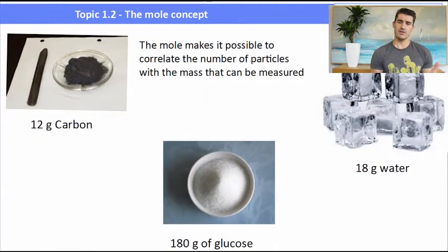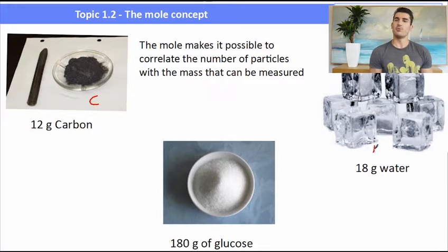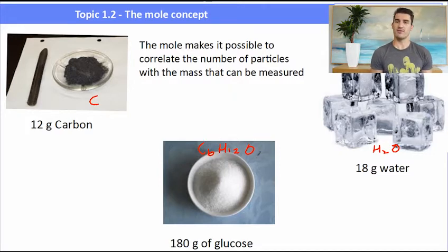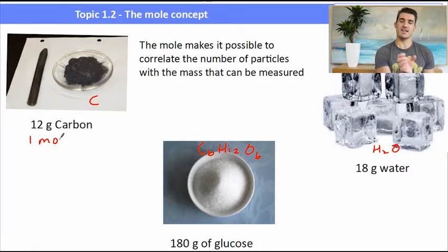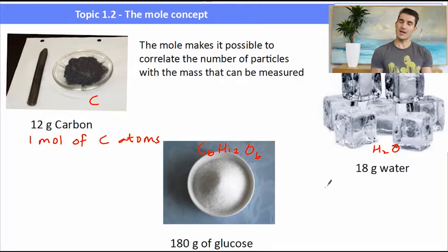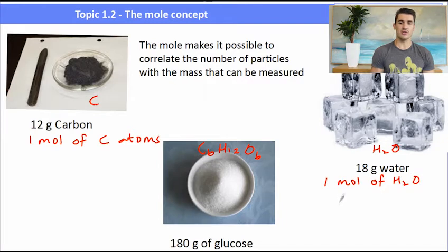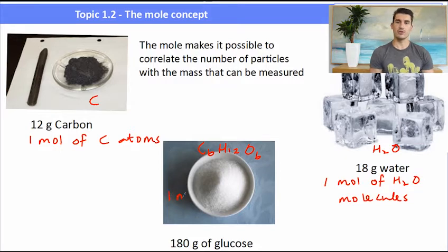Here I have three different samples: 12 grams of carbon, 18 grams of water, and 180 grams of sugar. In the carbon we have just carbon atoms. In the water we have H₂O molecules, and in the sugar we have glucose molecules. The important thing is they each contain what we describe as one mole of substance — one mole of carbon atoms in 12 grams of carbon, one mole of water in 18 grams of water, and one mole of glucose molecules in 180 grams of sugar.